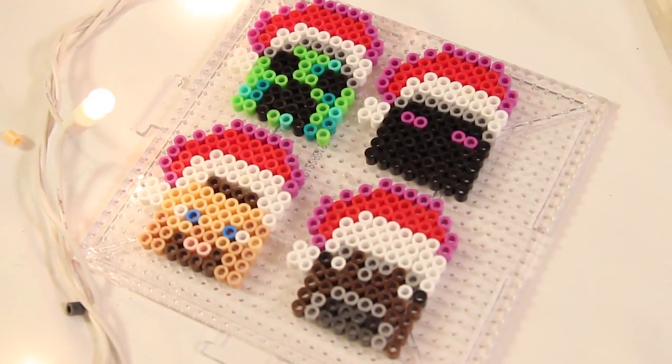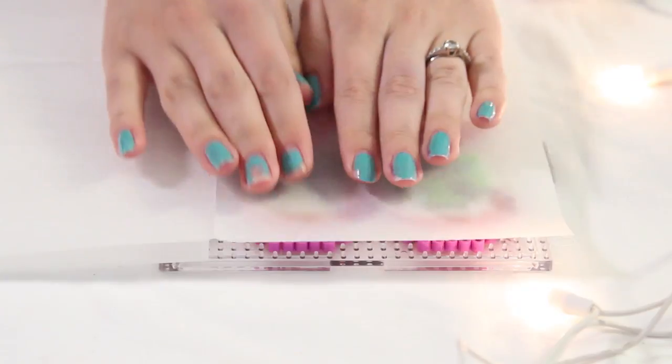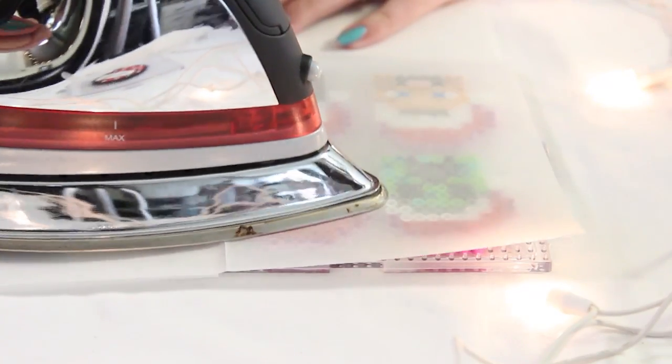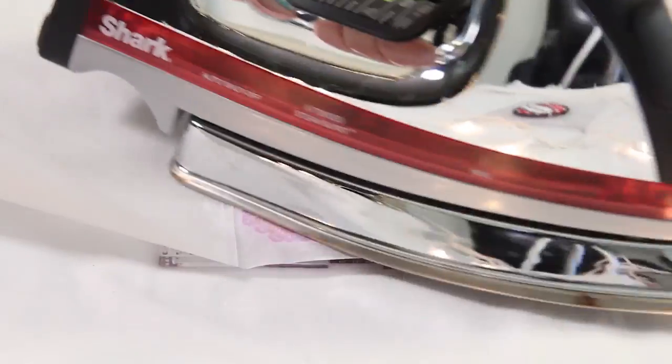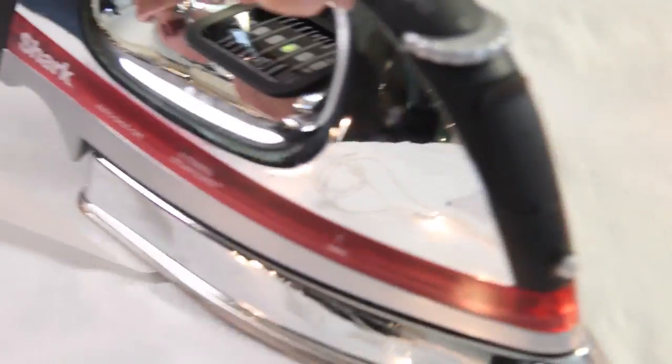So once you have all of your characters done on your pegboard, you're now going to get your parchment paper or your perler bead paper, and you're just going to put it on top of your beads. Make sure to preheat your iron to a medium to low heat.